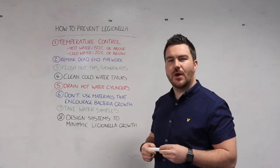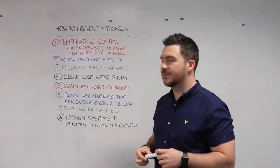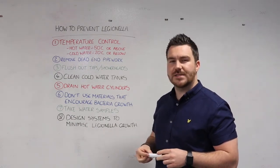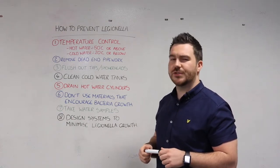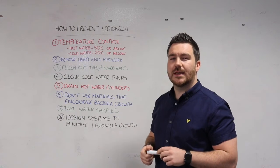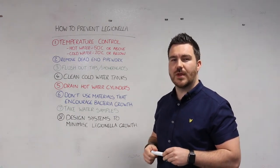In most business premises we've got either a tap or a shower head that's not utilized very often. If you've got any outlets that are infrequently used, particularly shower heads, make sure they're flushed through on a weekly basis and run for about two or three minutes to make sure the entire set of water is run through that outlet.